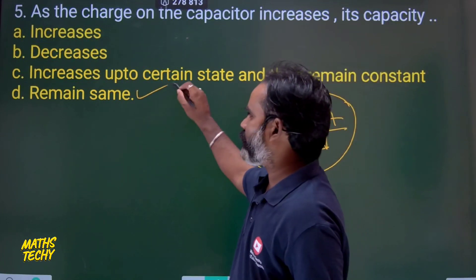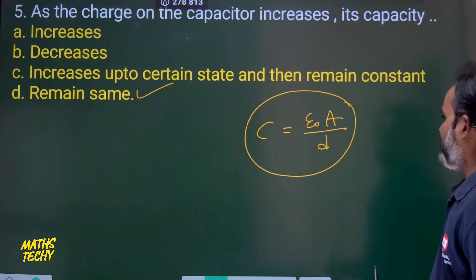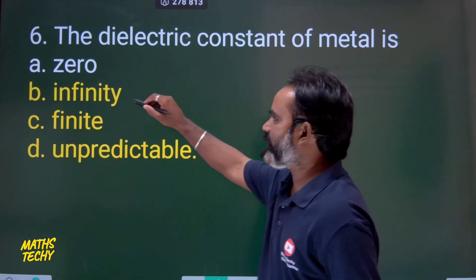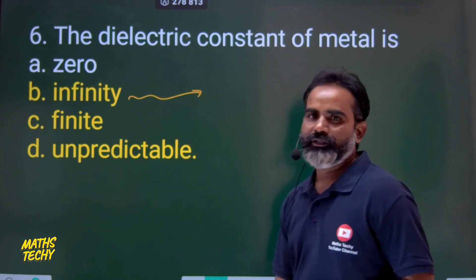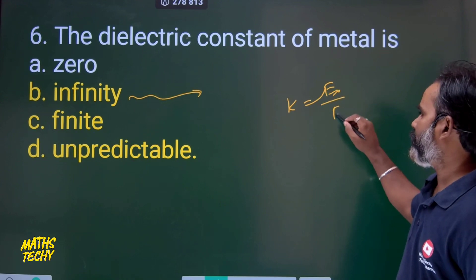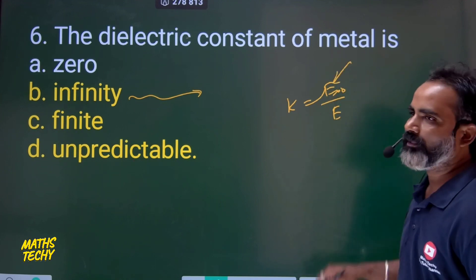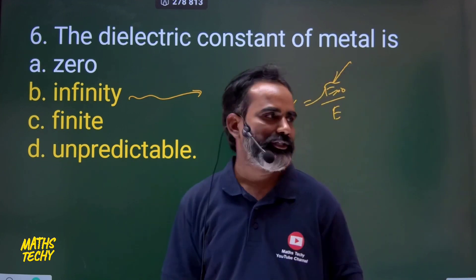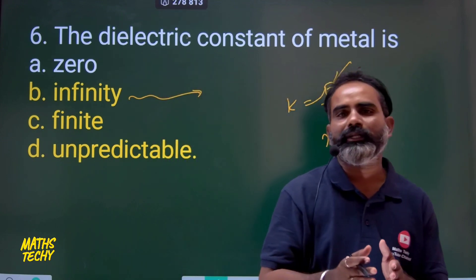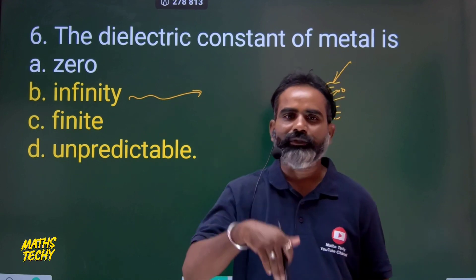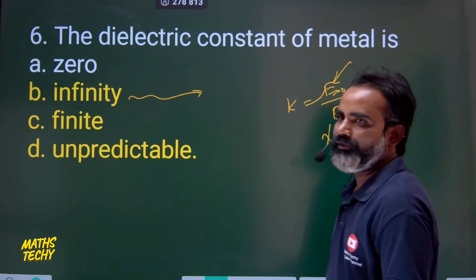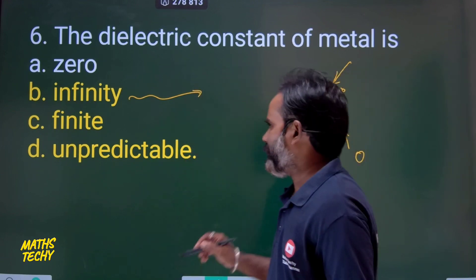Next: The dielectric constant of a metal is what? It is infinity. The dielectric constant k = E₀/E, where E₀ is the field without dielectric and E is the field with the conductor. Inside a conductor the net electric field is zero, so E = 0. Dividing by zero gives infinity. So the dielectric constant of a metal is infinity.